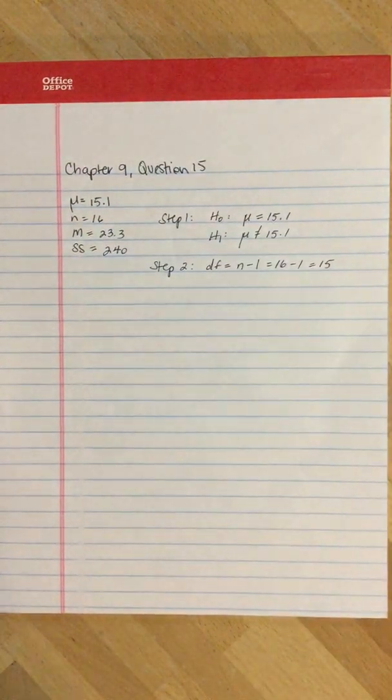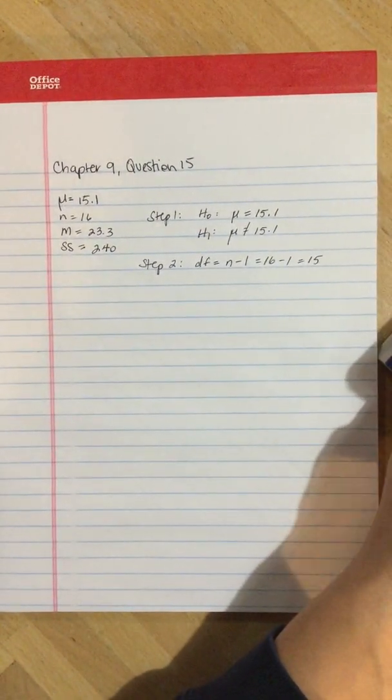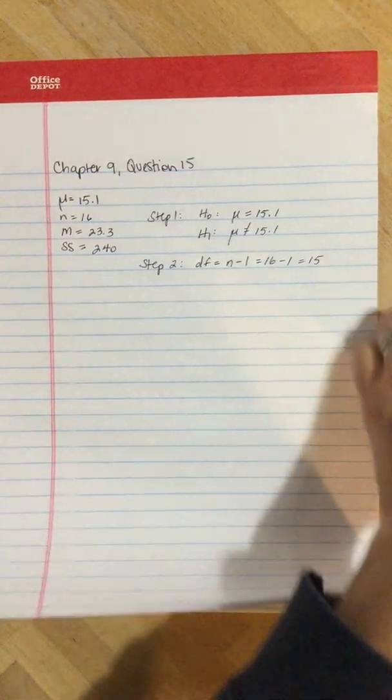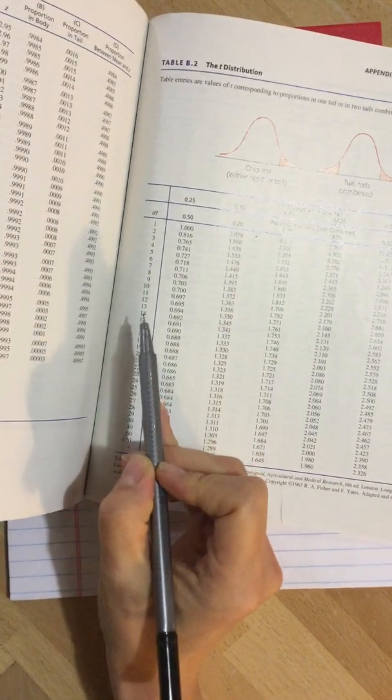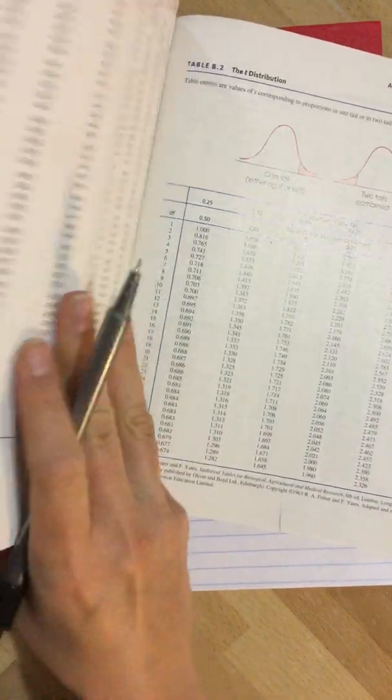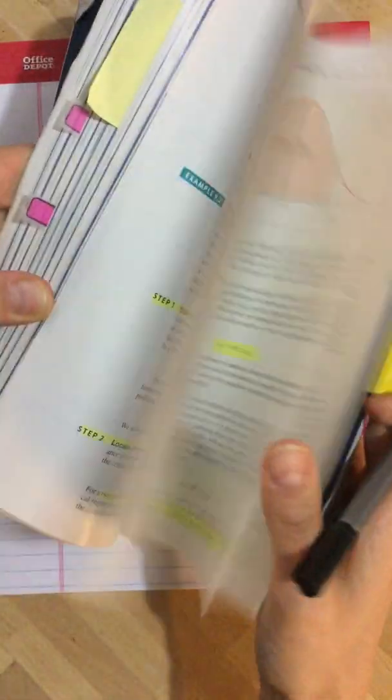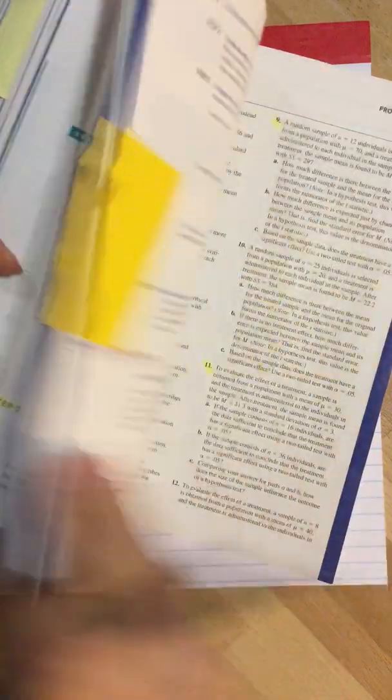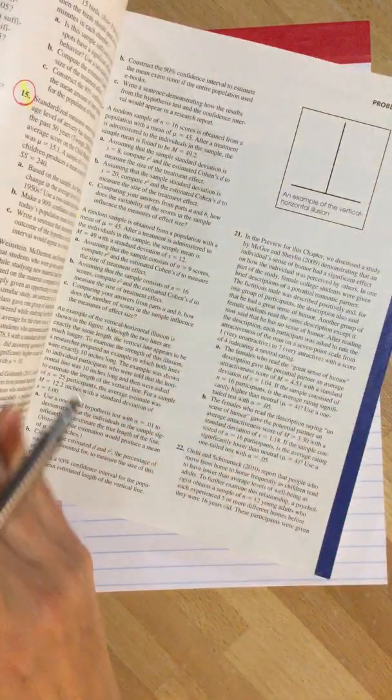We're going to use that to go to the back of the book to Table B2. We're going to find 14, and our alpha level was 0.01.